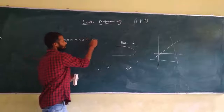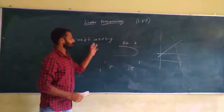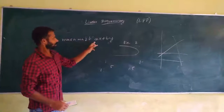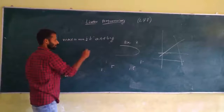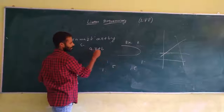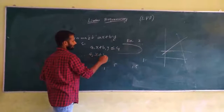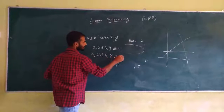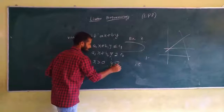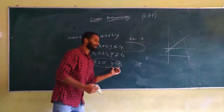The objective function is: maximize or minimize z equals ax plus by. The constraints are: a1x plus b1y is less than or equal to c1, a2x plus b2y is greater than or equal to c2, x is greater than or equal to 0, and y is greater than or equal to 0. These two variables x and y must be non-negative.